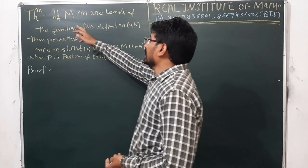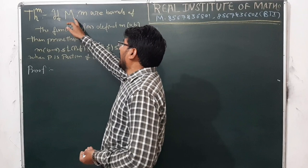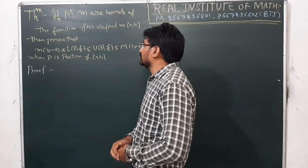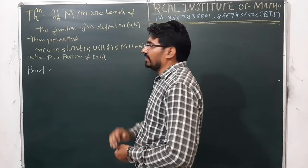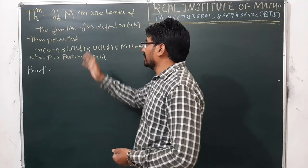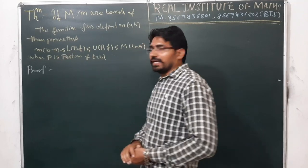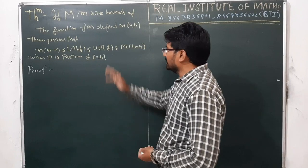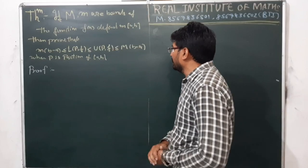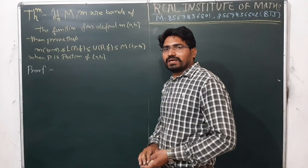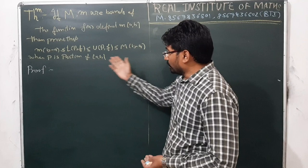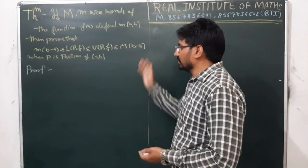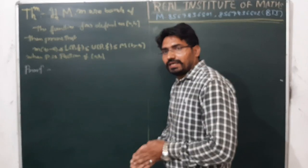So what is the theorem? If m and small m be the bounds of the function f(x) defined on [a,b], then we have to prove that m(b−a) ≤ L(P,f) ≤ U(P,f) ≤ M(b−a), where P is any partition of the interval [a,b].